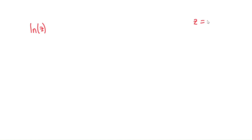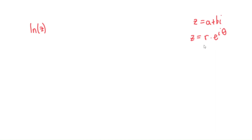So how should we define natural log of z? Every complex number z can be written in the form a plus bi — that's really just the definition of a complex number. But every complex number can also be written in what's called polar form: z equals r times e to the i theta. This ultimately comes from Euler's formula, and it's equivalent to the idea of polar coordinates.